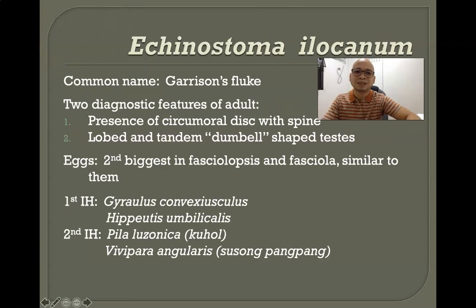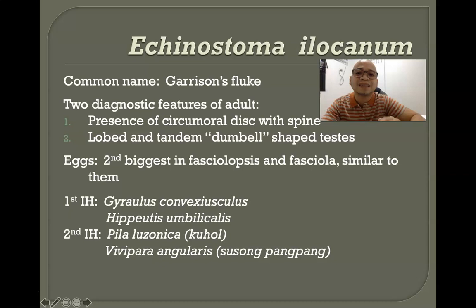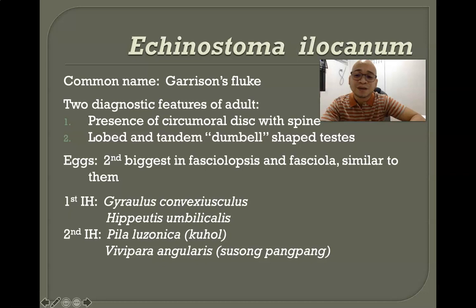Echinostoma ilocanum has two key diagnostic features: first, the presence of a circumoral disc provided with spines; and second, lobed tandem testes, commonly described as dumbbell-shaped testes. The eggs of Echinostoma ilocanum are considered the second biggest after Fasciolopsis and Fasciola, and they are morphologically similar.